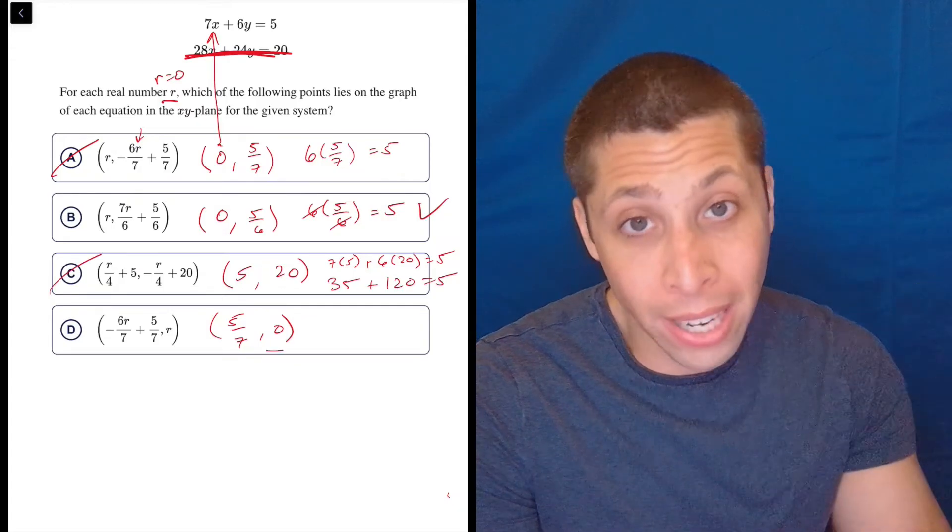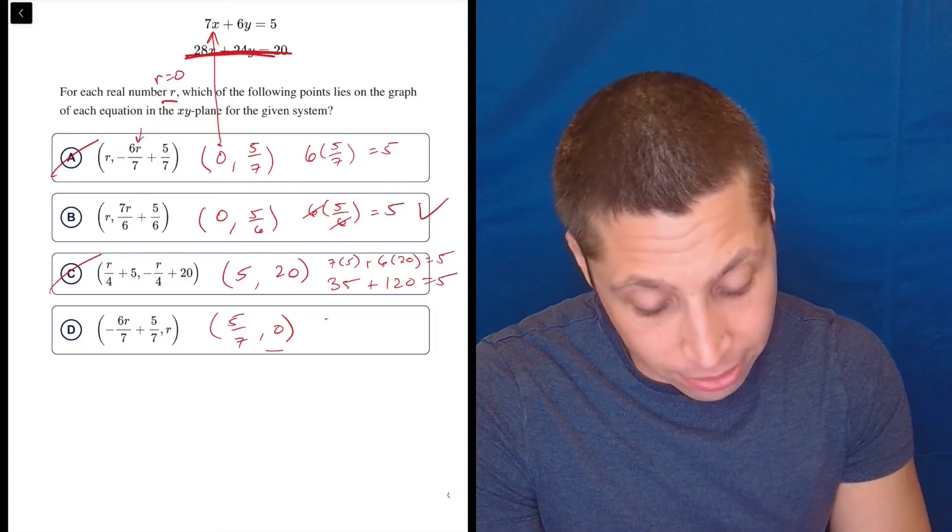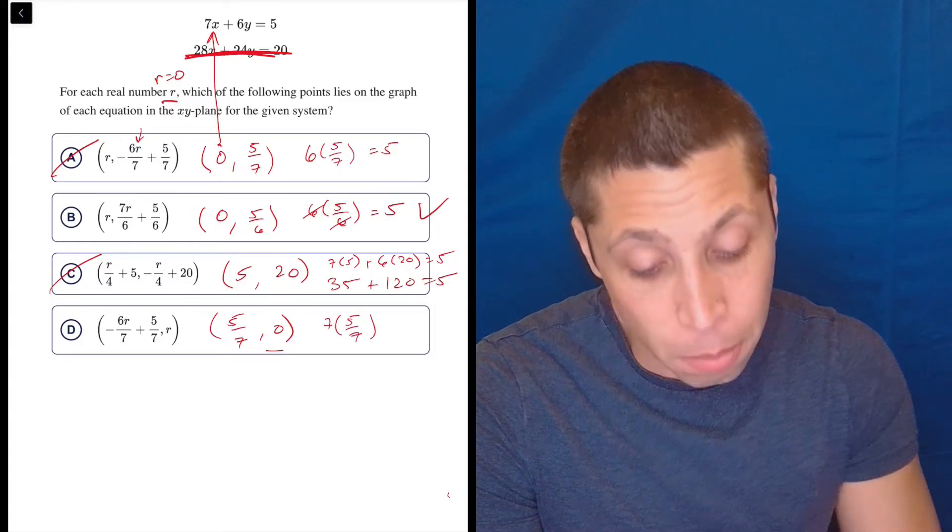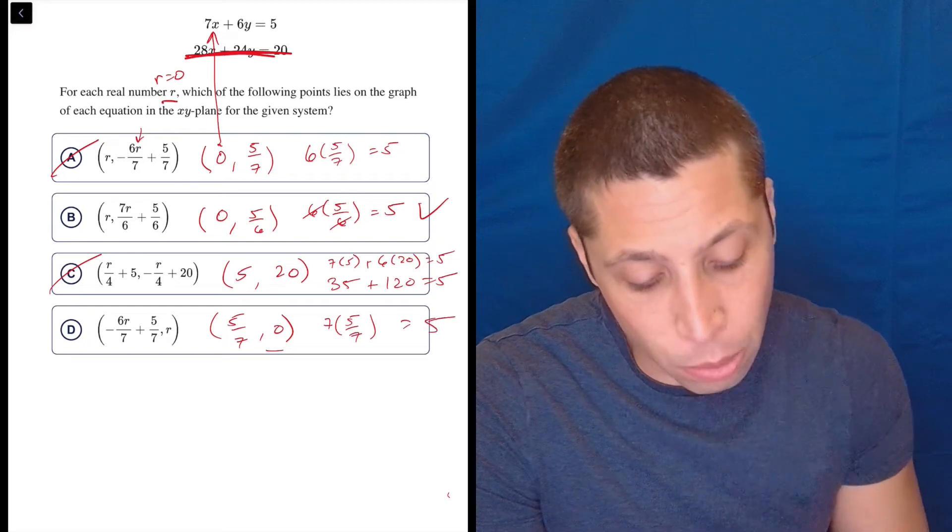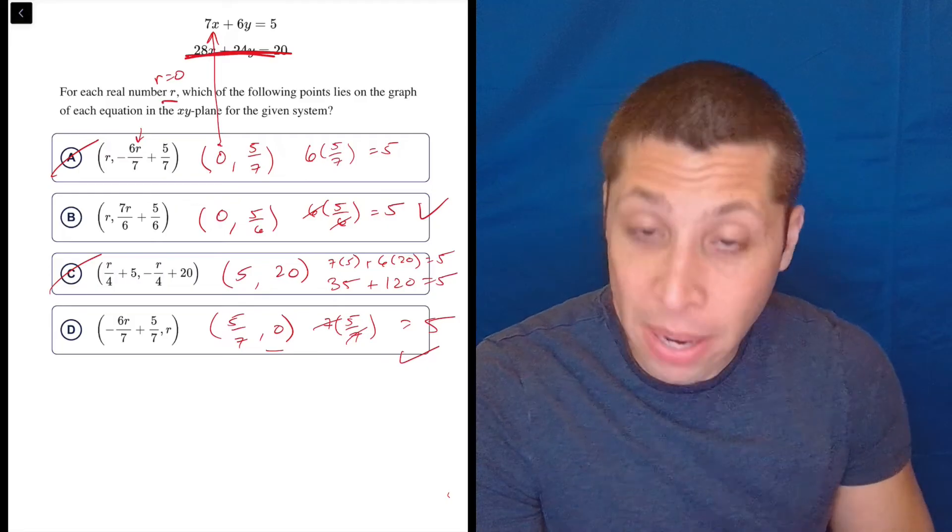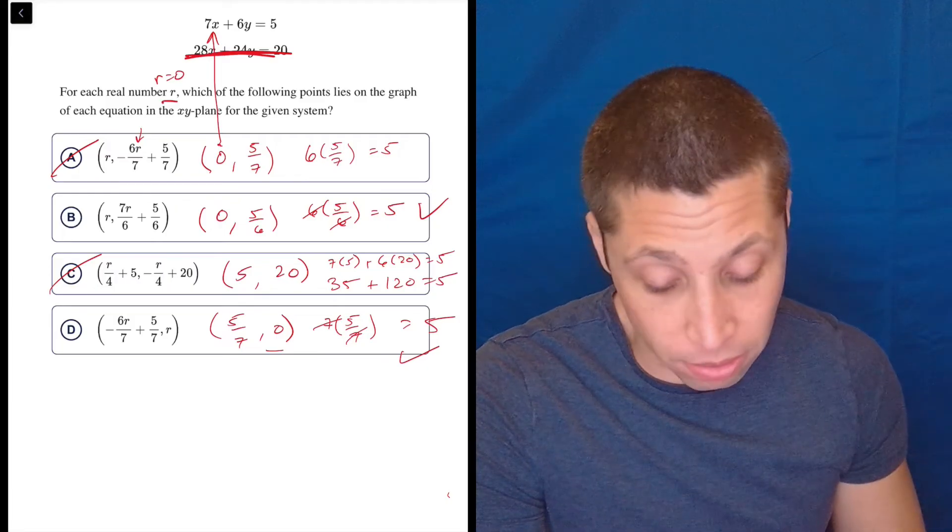And if we do this here, now when we plug in the 0, the Y term is going to get knocked out. So we get 7 times 5/7 plus 0 equals 5. And so here the 7ths go, and this also works. That doesn't surprise me, having multiple answers work. That's fine.